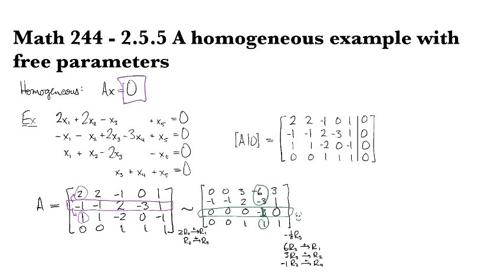And then that will tidy things up significantly. So I have 0, 0, 3, 0, 3; -1, -1, 2, -3, 1; 0, 0, 0, 1, 0. Just got rid of that guy. And 0, 0, 1, 0, 1.